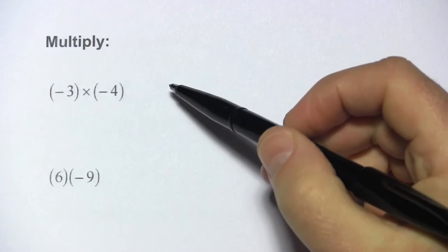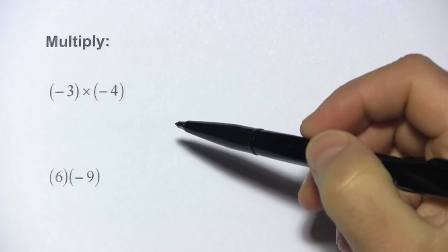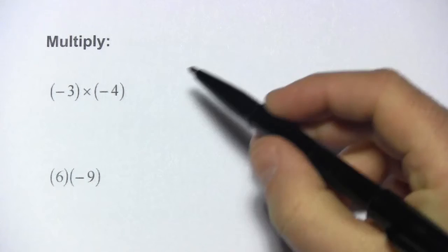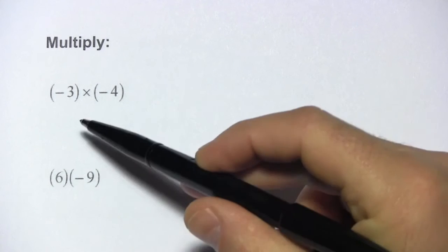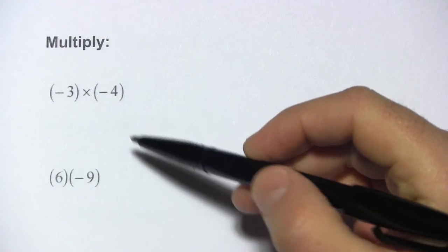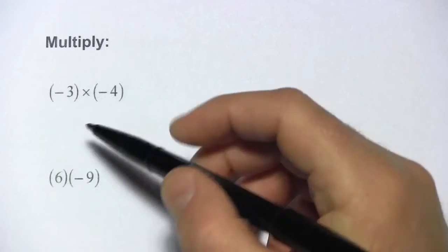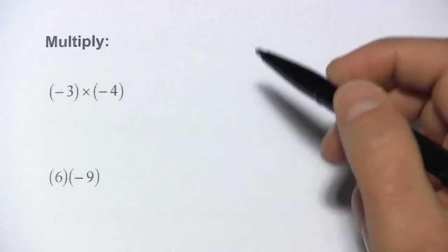In these problems we're doing some multiplication and the only complicating factor is that we have some negative signs. The rule here is that a negative times a negative, this actually works for division too, so if it was a negative divided by a negative you'd do the same thing, a negative times a negative is a positive.